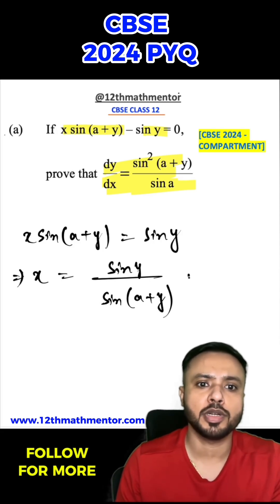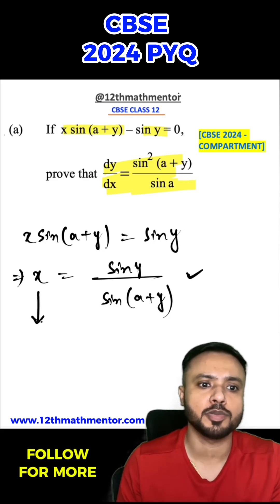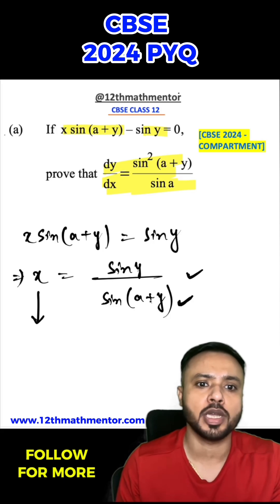The purpose behind writing it in this form is that when I apply the quotient rule of differentiation with respect to y, I will directly get sin²(a+y) in the denominator.